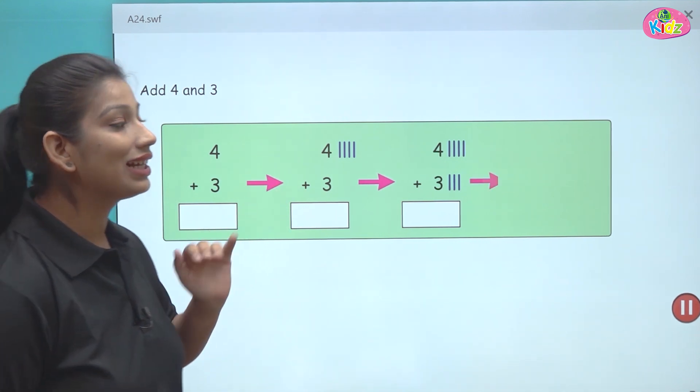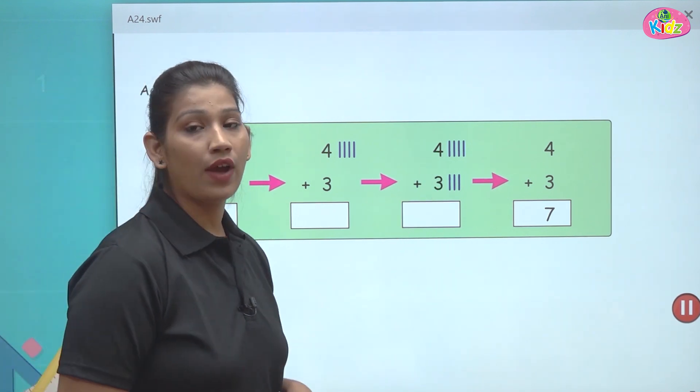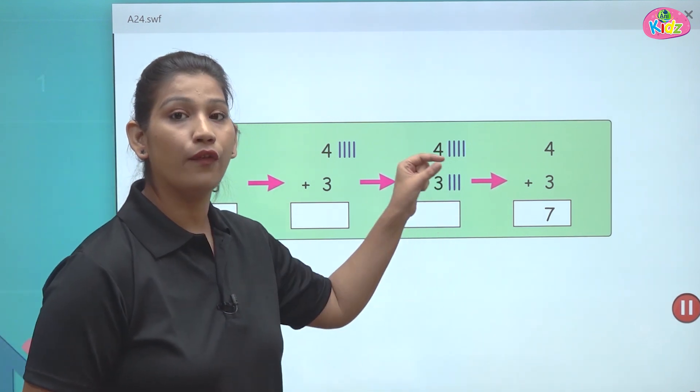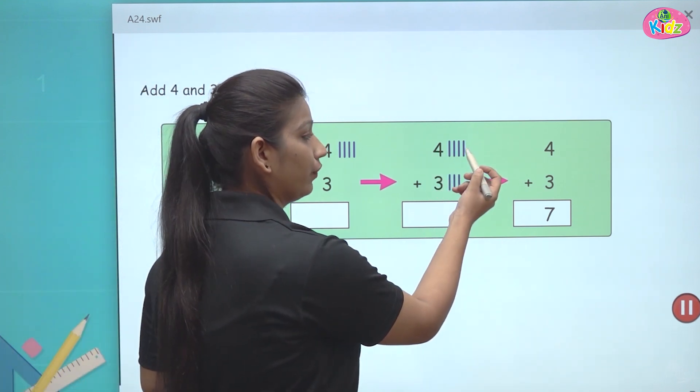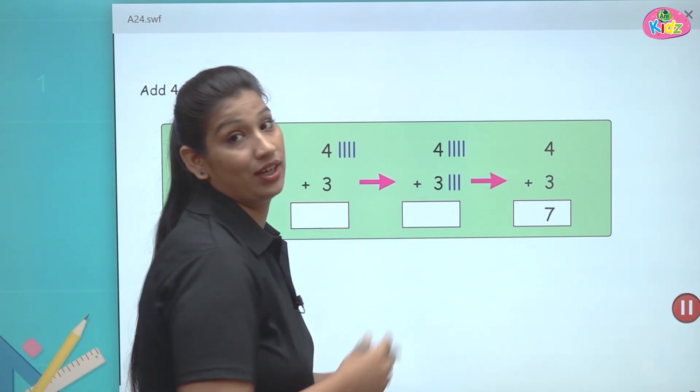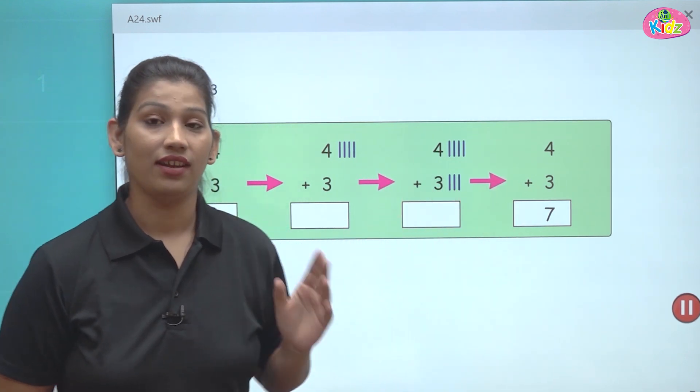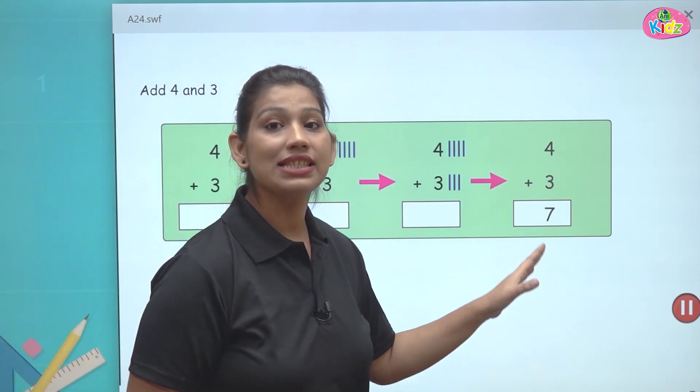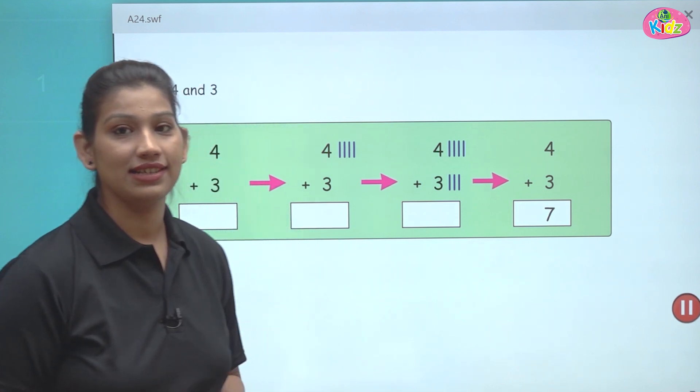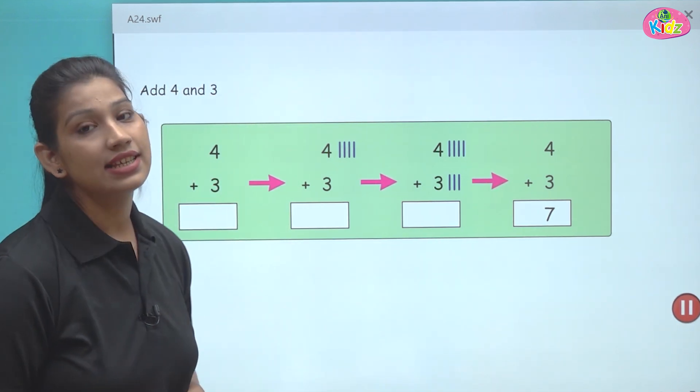And after both we will count the number and find out the answer. Here you can find out the answer by counting four and three together. One, two, three, four, five, six, seven. So how many lines, how many sticks we have now? Seven. We have seven lines in total. That means seven is our answer. Four plus three is seven.